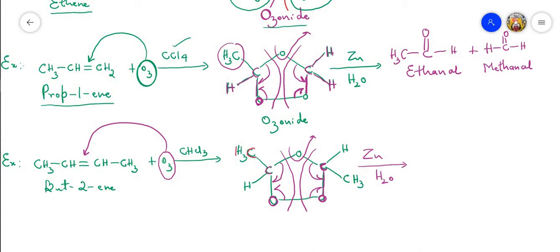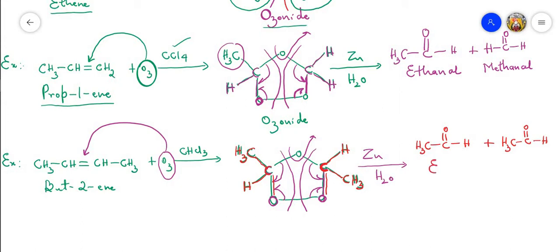After cleavage, on one side we have CH₃ linked to a carbon with hydrogen, with a new C=O bond forming — giving CH₃–CHO (ethanal/acetaldehyde). The other product is the same: CH₃–CHO. So we get two molecules of ethanal (E-T-H-A-N-A-L).